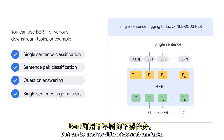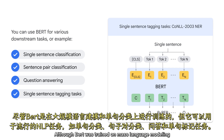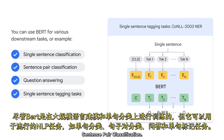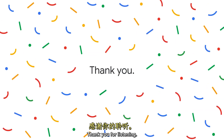BERT can be used for different downstream tasks. Although BERT was trained on masked language modeling and single sentence classification, it can be used for popular NLP tasks like single sentence classification, sentence pair classification, question answering, and single sentence tagging tasks. Thank you for listening.